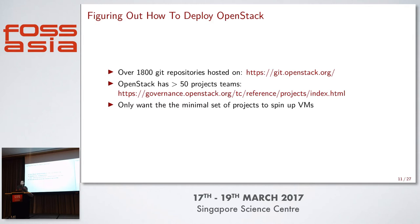After getting the hardware set up and doing a base Ubuntu install on the servers, it was time to install OpenStack to figure out how to build and deploy the cloud. Coming at it with no experience, it can be daunting. The official OpenStack project has 1,800 Git repos and over 50 project teams. It's not straightforward to figure out just by looking at the project how everything comes together. All I wanted was a small cloud that could boot VMs I could log into.